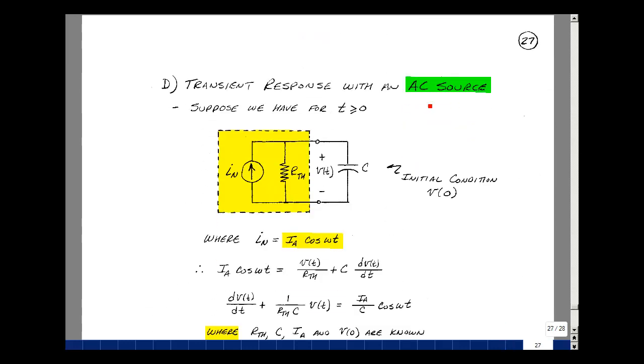Suppose you have a linear circuit with an AC source in it and a switch, and at time T equals T0 equal to zero, that switch changes state. And then we find the Norton equivalent circuit, where the Norton current is some sinusoid function, I sub A times the cosine of omega T. Suppose you also know the initial voltage across the capacitor at T equals zero minus and zero plus.